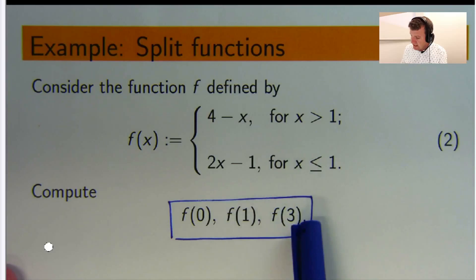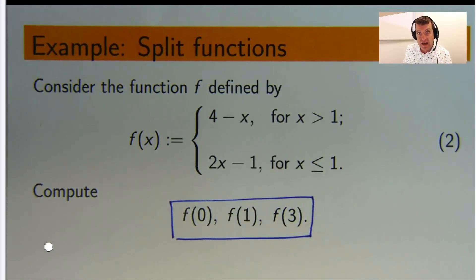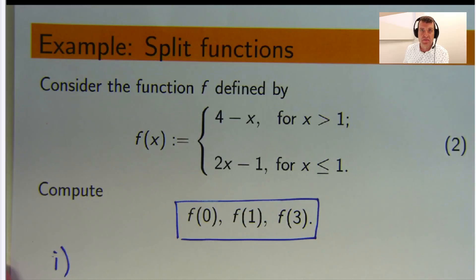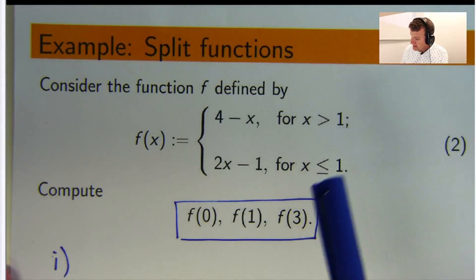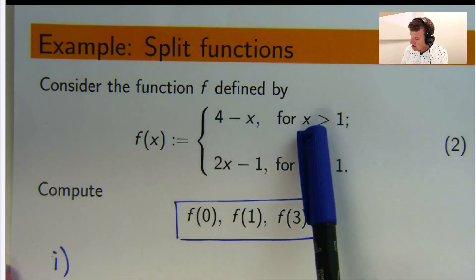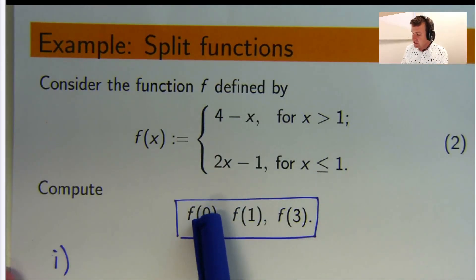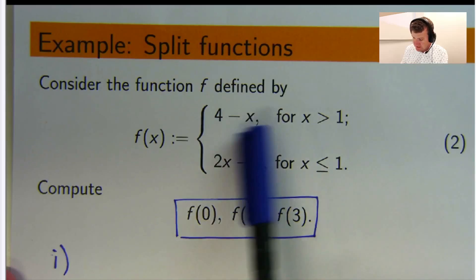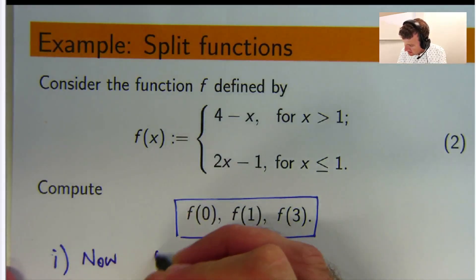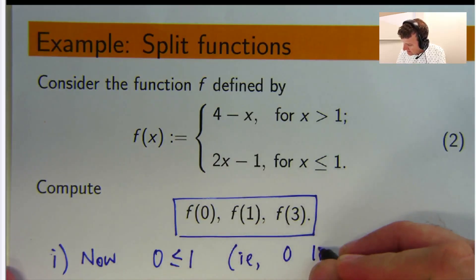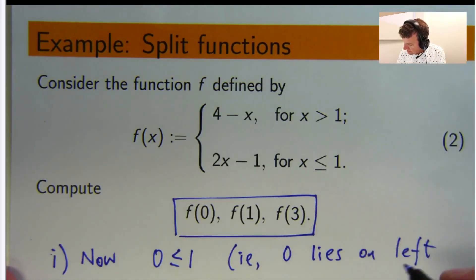So let's do that. So for the first one, we want to calculate the value of this split function when x equals 0. So the jump happens at 1. So this is the definition for x to the right of 1. This is the definition for x to the left of 1. So 0 is definitely less than 1. It's to the left of 1. So this is the definition that we want. So 0 is less than or equal to 1, lies on the left, or to the left.